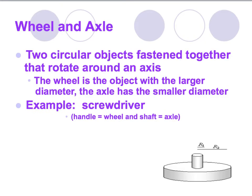The wheel and axle involves two circular objects fastened together that rotate around an axis — a fixed point everything else rotates around, similar to how Earth rotates around its axis at the north and south poles. The wheel has a larger diameter and the axle has a smaller diameter. In the diagram, R stands for radius, which is half the diameter. Examples include a screwdriver — the handle is the wheel, the shaft is the axle — as well as doorknobs and car or bike wheels.